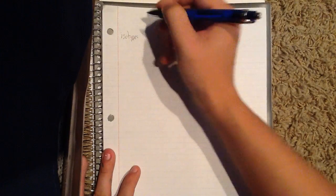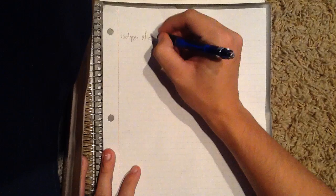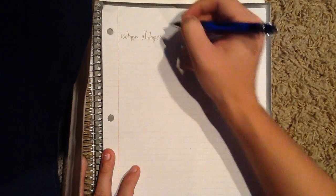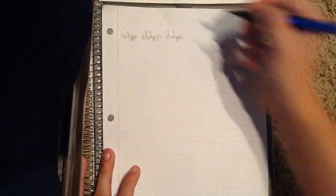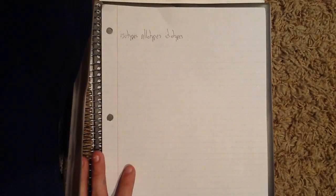My name is Caleb Dunn, and today we're going to be talking about isotypes, allotypes, and idiotypes, and some of the differences between them.